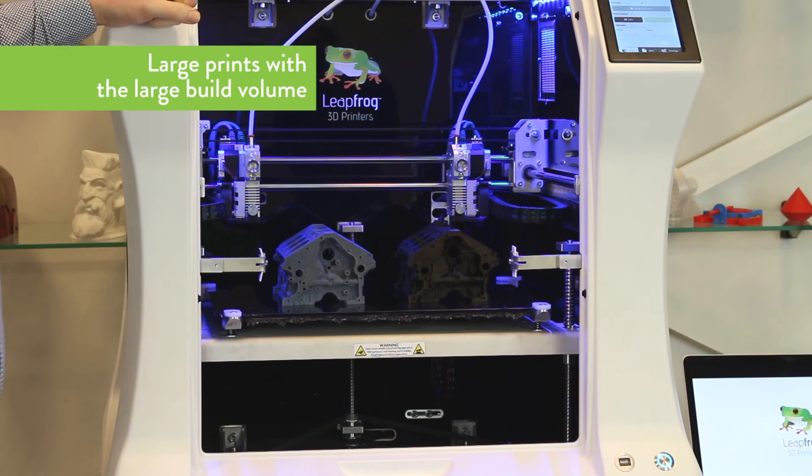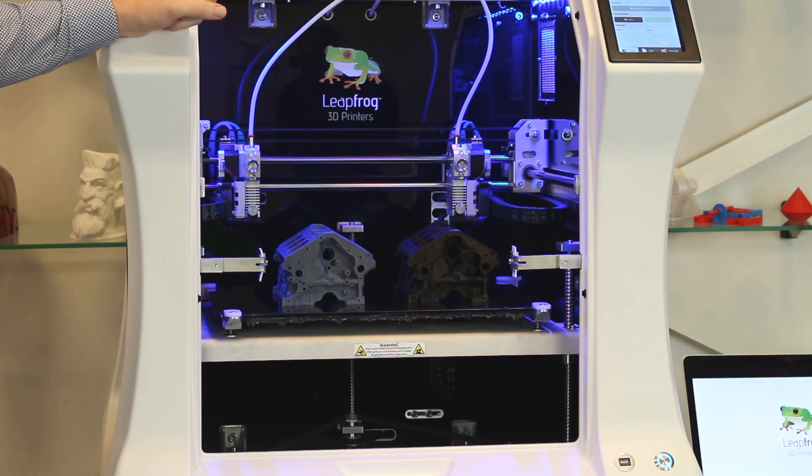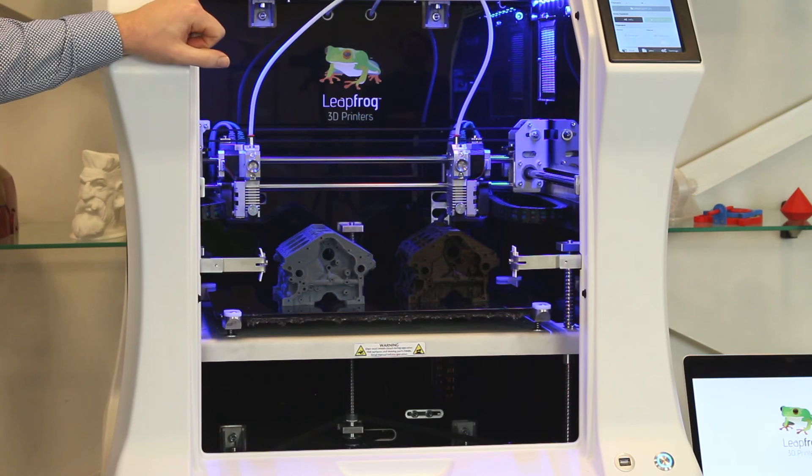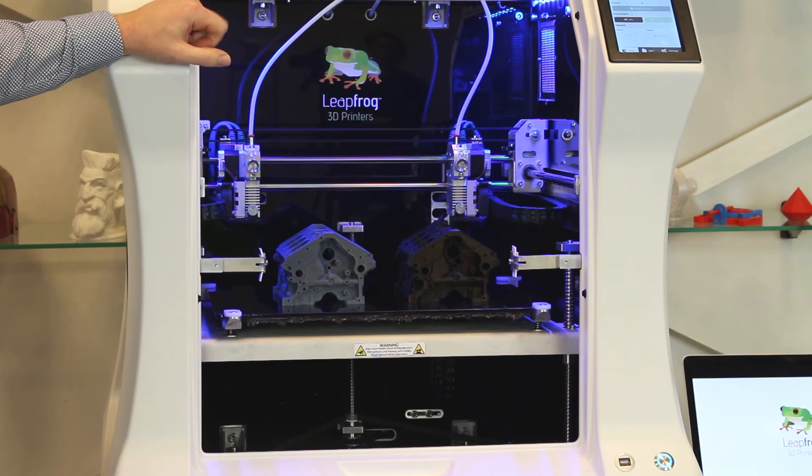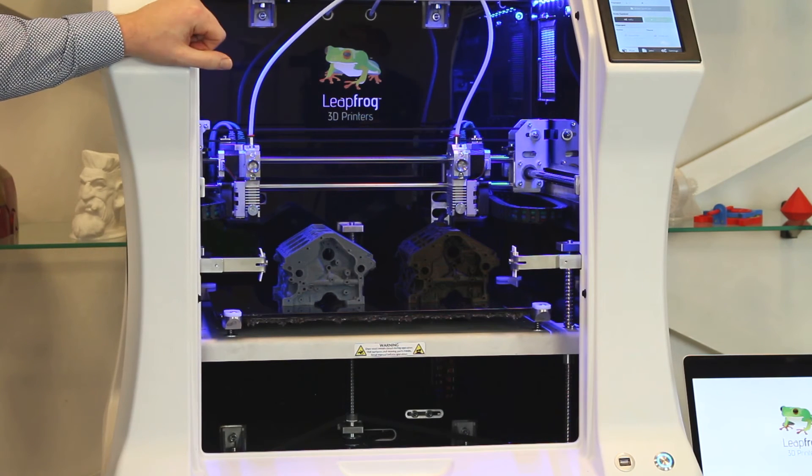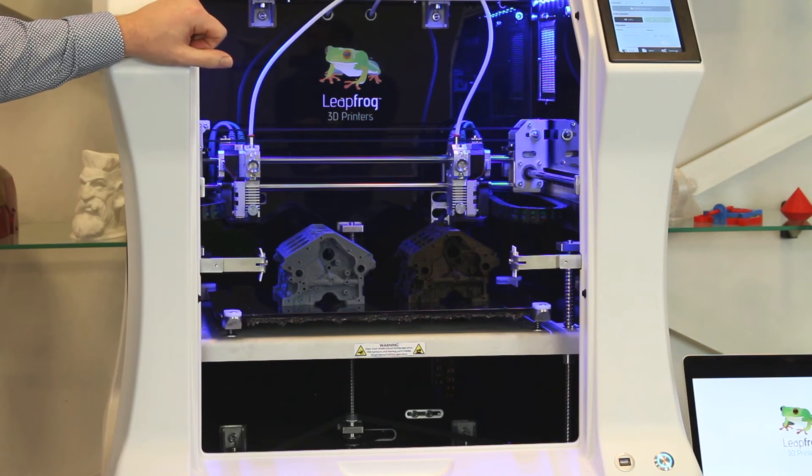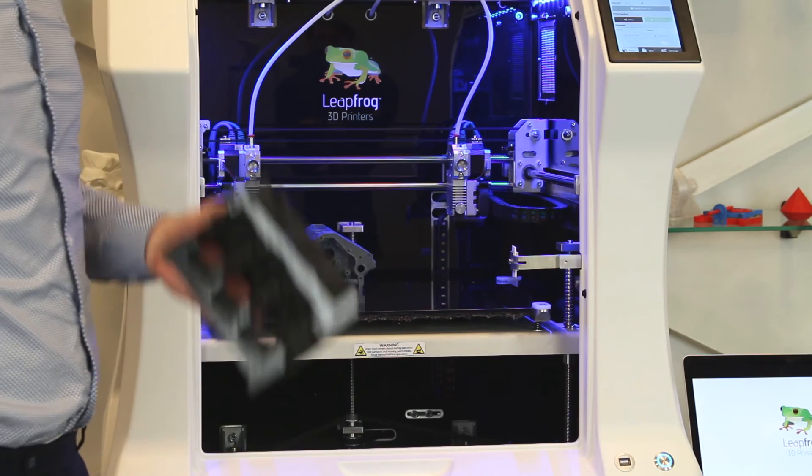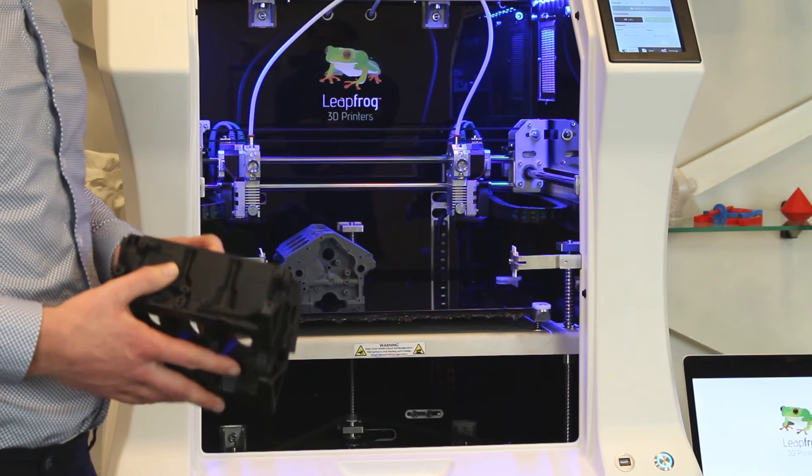As you can see, the Bolt is a very large printer and it actually has one of the biggest build volumes in our segment. What we've done here is we've actually printed two parts at the same time using the sync mode. This effectively doubles the output speed of the printer. As you can see, even these individual parts are larger than what most competing printers can print.